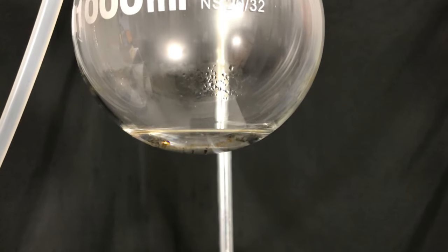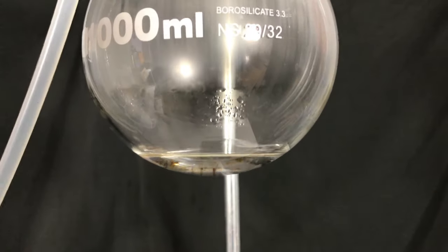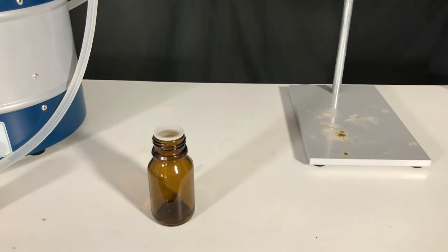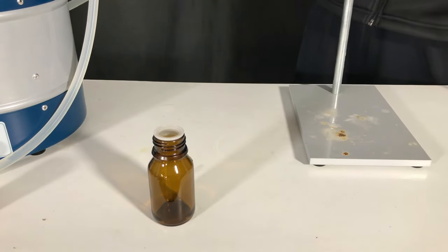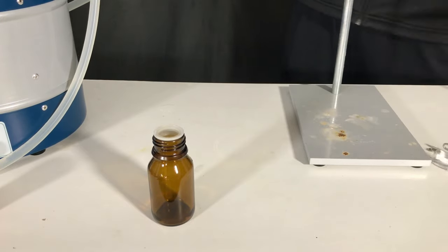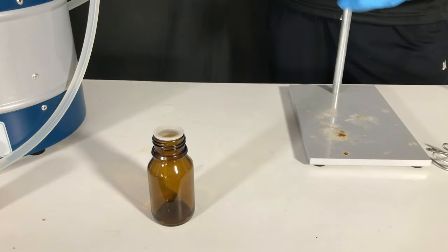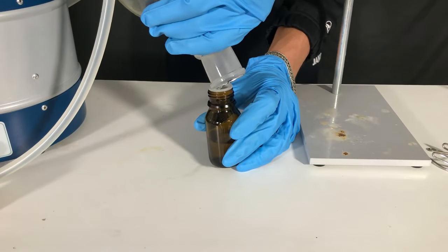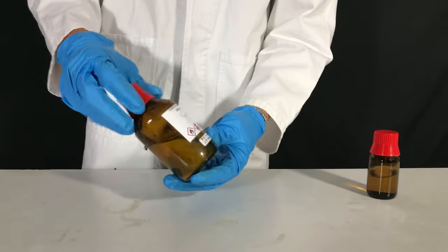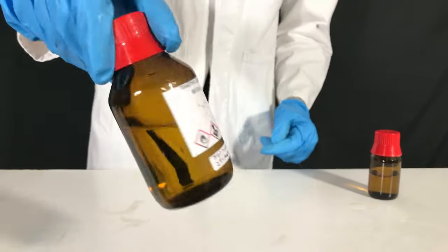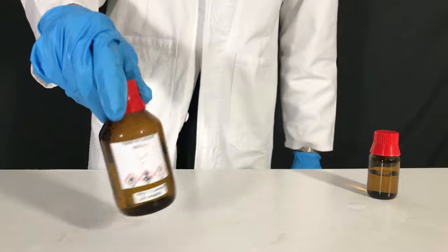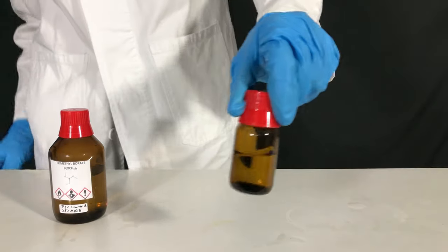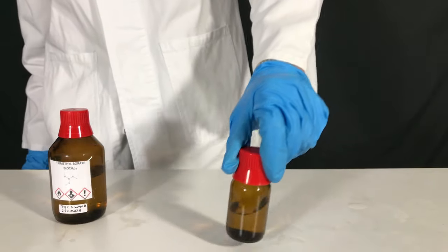From the second distillation we collected 30 ml of methanol containing just a little tri-methyl borate. This was transferred to a separate storage bottle. And this is what we collected: some tri-methyl borate methanol azeotrope and some mostly methanol containing still little tri-methyl borate.